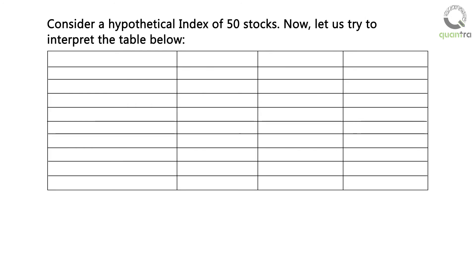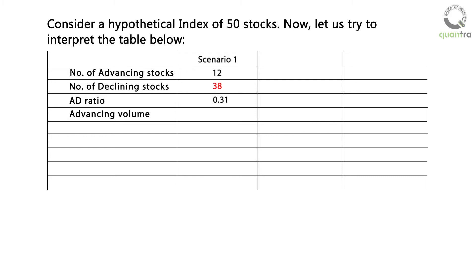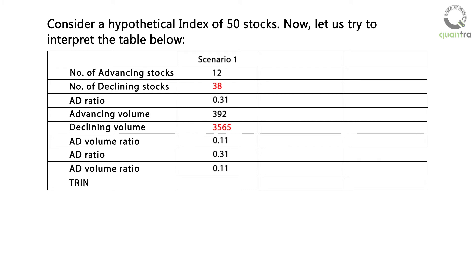Now, let us consider a hypothetical example to understand TRIN. Assume that an index contains 50 stocks. We will examine three different scenarios involving the movement of these stocks. In Scenario 1, the number of advancing and declining stocks are 12 and 38 respectively, resulting in an AD ratio of 0.31. The traded volumes for advancing and declining stocks are 392 and 2,565 respectively, resulting in an AD volume ratio of 0.11. TRIN would be 0.31 divided by 0.11, which is equal to 2.82.